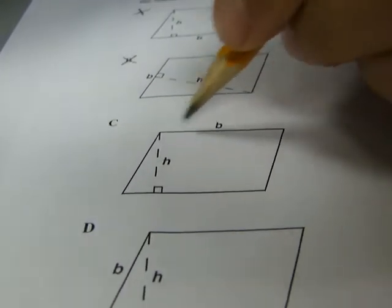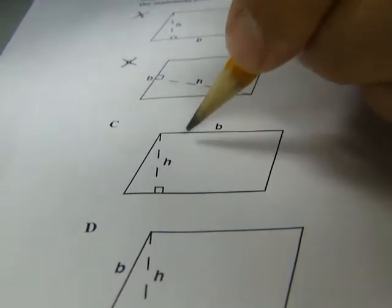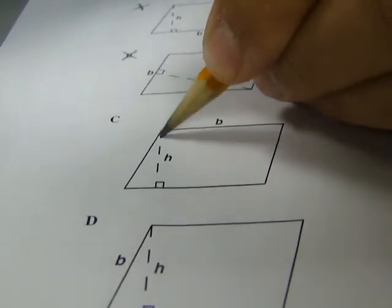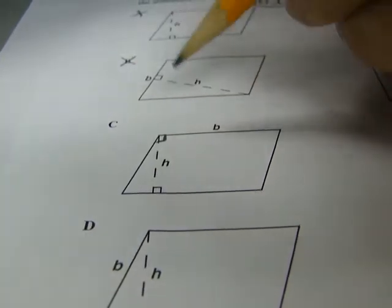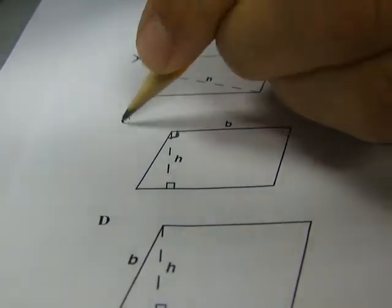C, we have the base up here now and the height here. But, again, if these are parallel and this is perpendicular, then this is also perpendicular. Therefore, this fits the theorem and cannot be our answer.